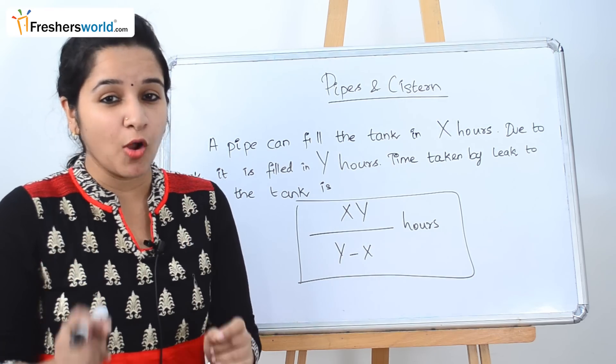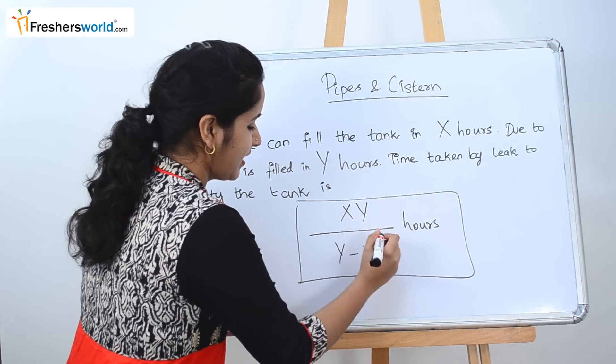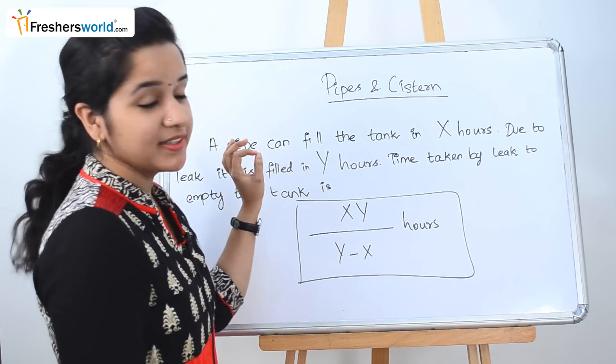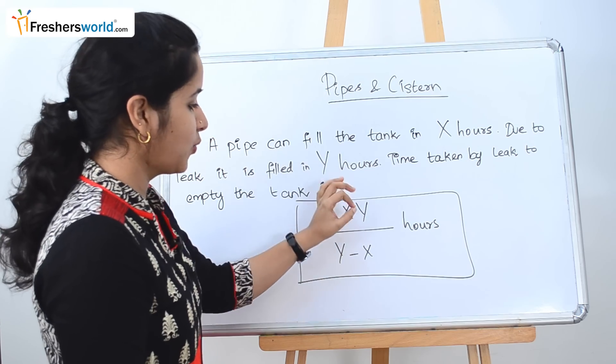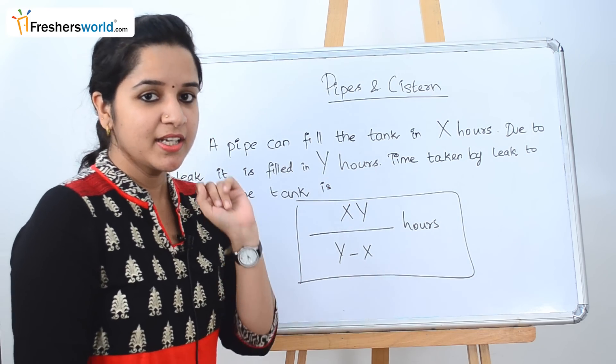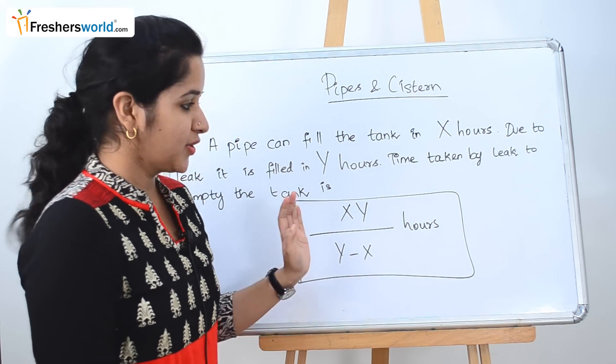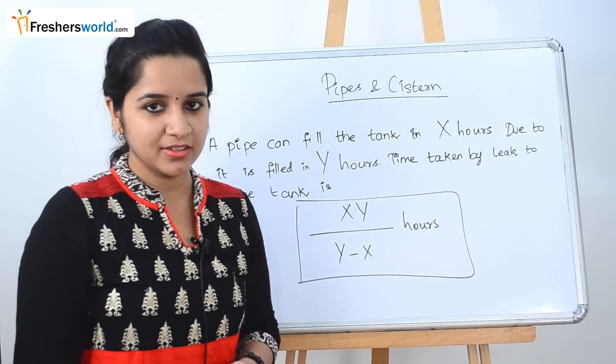So the easiest formula to remember is XY divided by Y minus X hours. X is nothing but the number of hours taken by the pipe to fill the tank, and Y is the number of hours taken to fill the tank with the leakage divided by Y minus X hours. So let's solve a problem to understand this concept better.